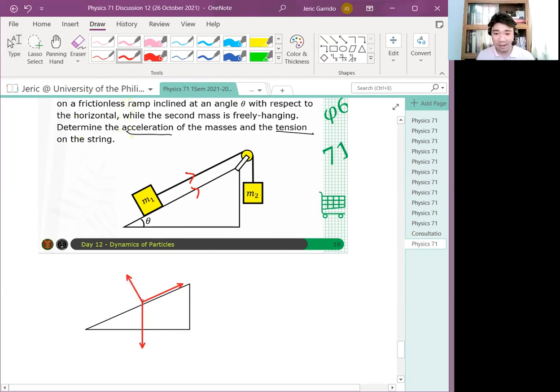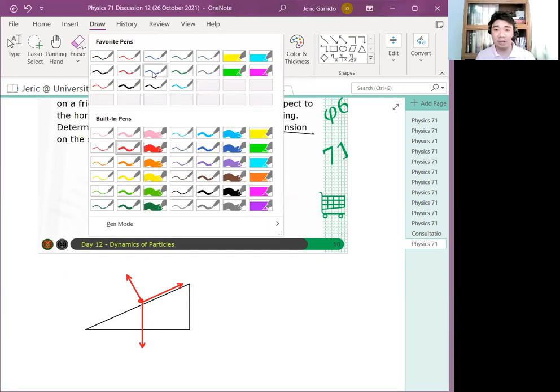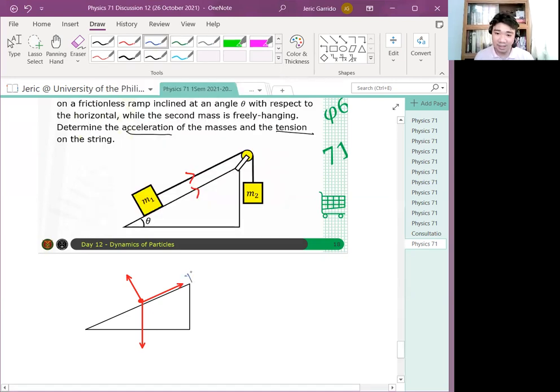Now, by the way, be careful with notation because you need to put an index when there are two objects to indicate which mass it is. Like for example, in this particular example, I will write this as... We have the same assumptions as in the previous problem. Therefore, the tension and the acceleration of the two masses will still be the same. However, the normal force N1 may not be the same as the normal force in M2.